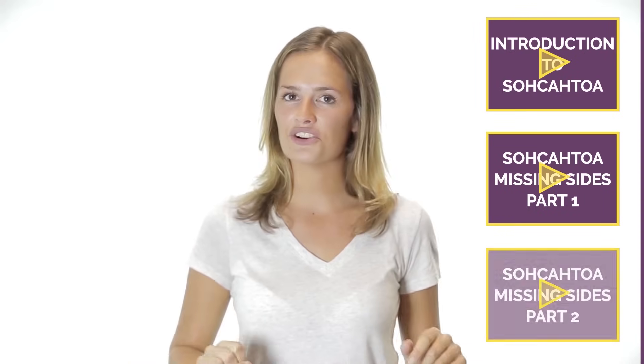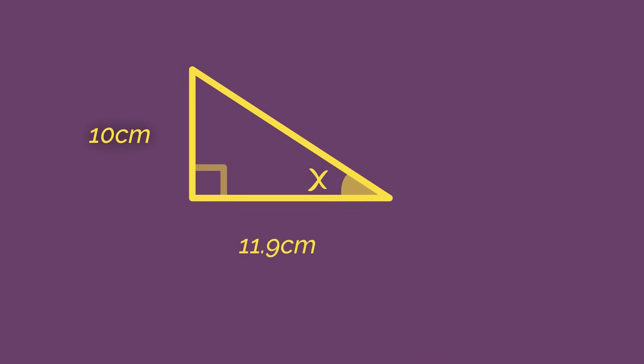and be comfortable using sine, cos and tan. If you're not sure, watch our earlier videos first. Let's jump straight in with an example. As always with SOHCAHTOA, start by labeling the sides as the hypotenuse, adjacent and opposite.